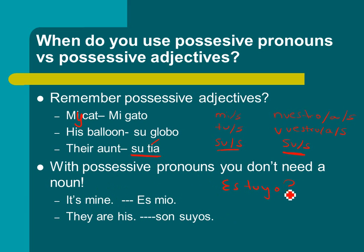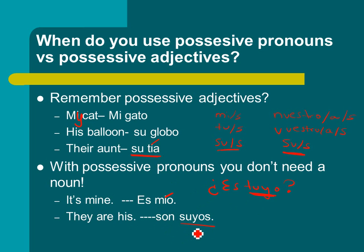You don't have to put the noun there because you have your possessive pronoun to take its place. So 'it's mine' would be 'es mío' — don't forget your accents. And then 'they are his' is 'son suyo.' So if you found some books and think they're Bob's — they're his — son suyo. You're going to have your verb and your possessive pronoun in most situations, and that's it.